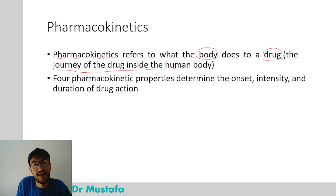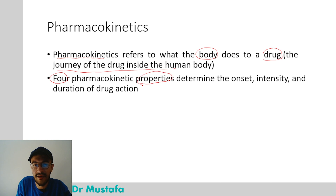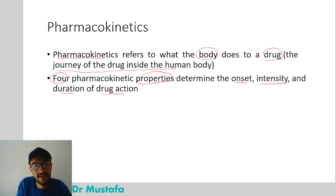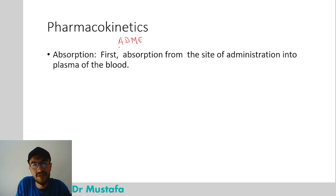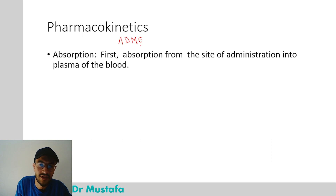In pharmacokinetics we have four properties that determine the onset, the intensity, and the duration of drug action. Those properties are abbreviated in the mnemonic ADME: the A stands for absorption, the D for distribution, the M for metabolism, and the E for elimination.